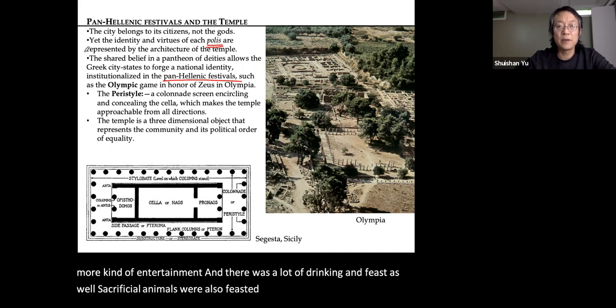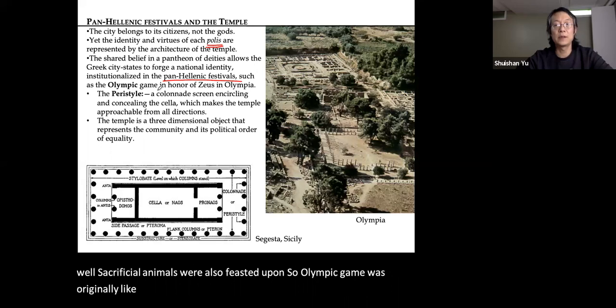During Panhellenic festivals there were athletic games, sacrifices to gods and goddesses, theatrical performances — first to narrate mythology but increasingly for entertainment — as well as feasting and drinking. Sacrificial animals were feasted upon. The Olympic games originally included all of these elements.